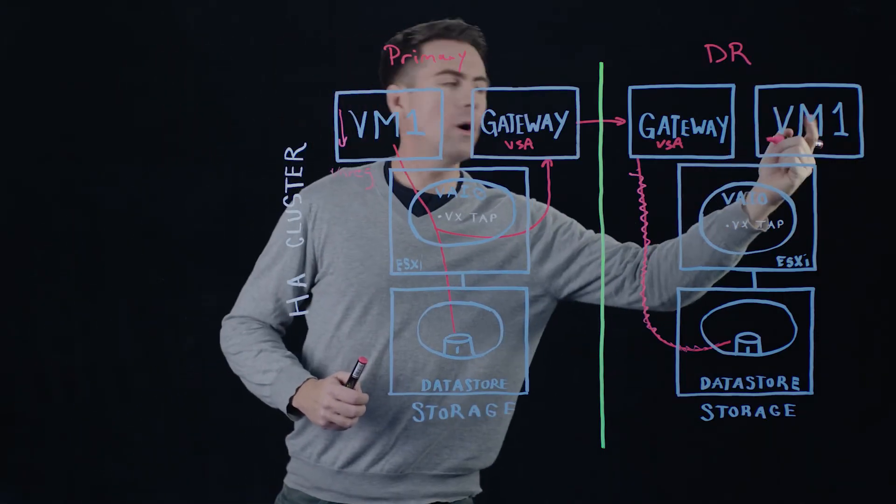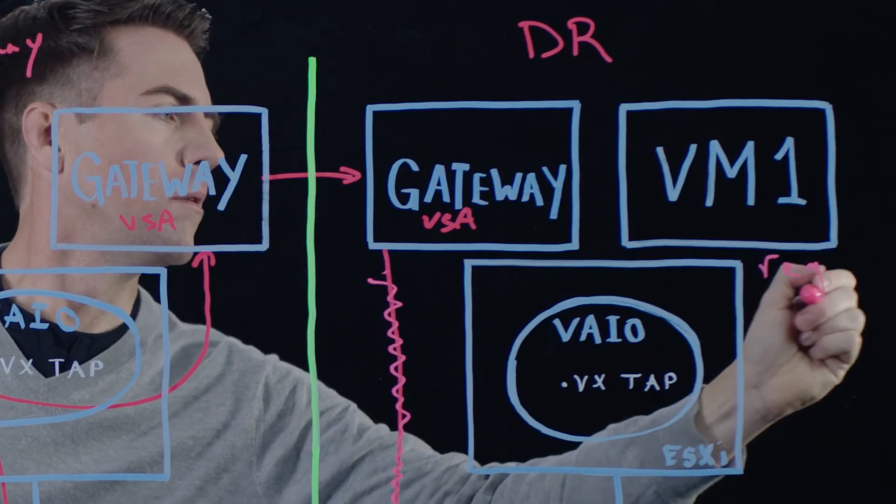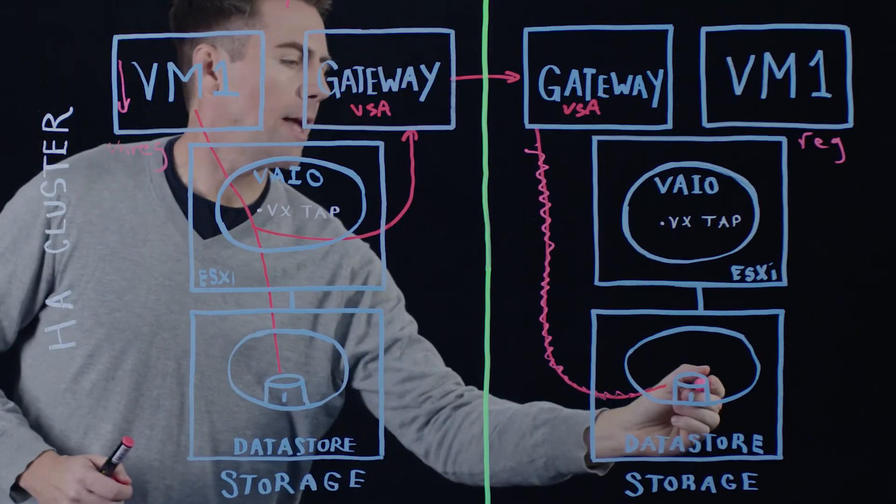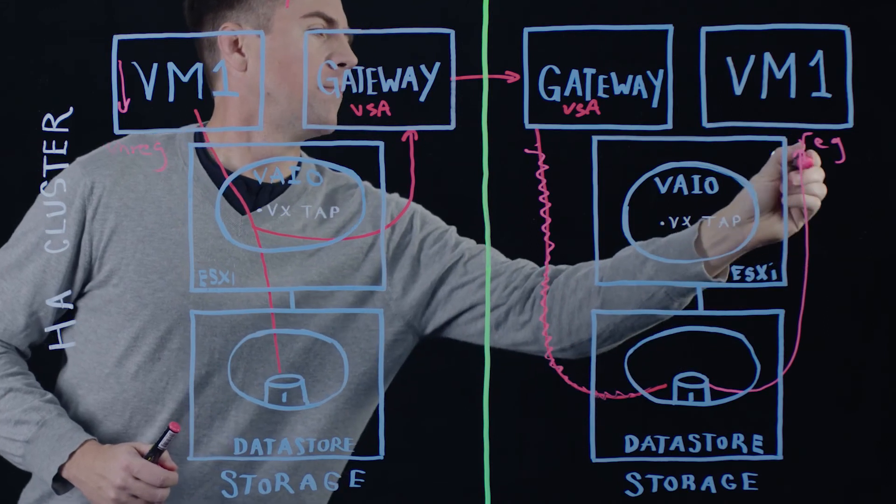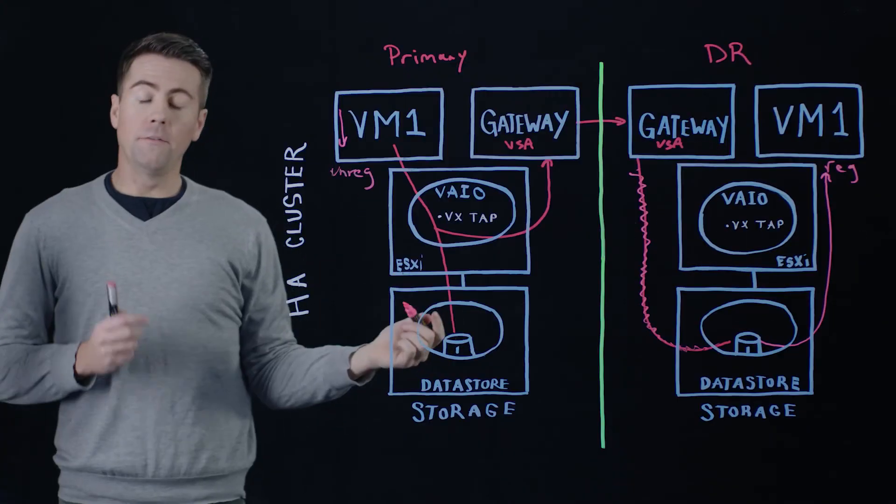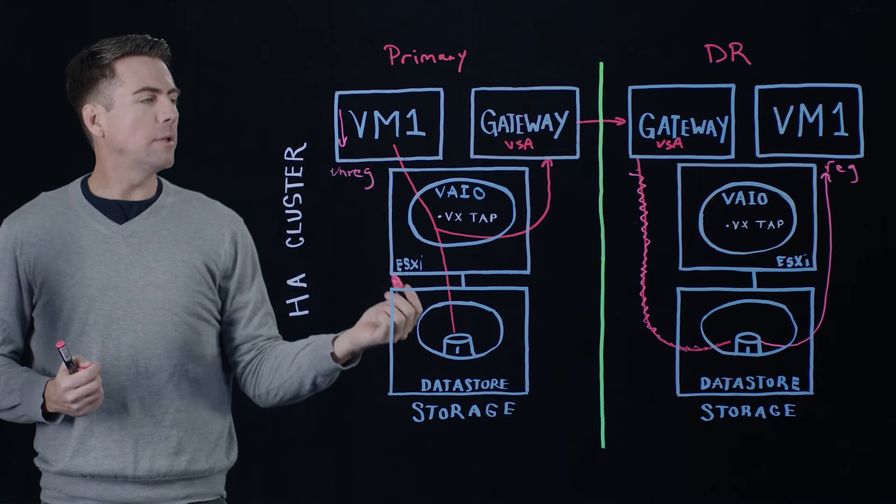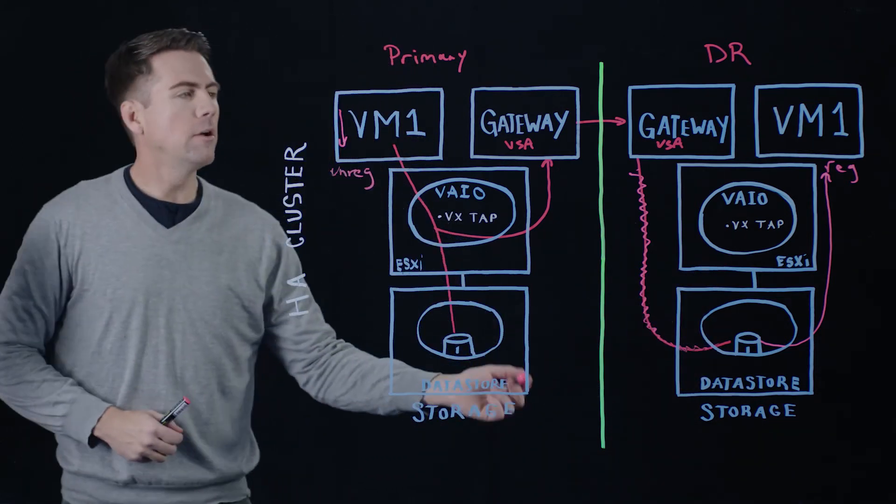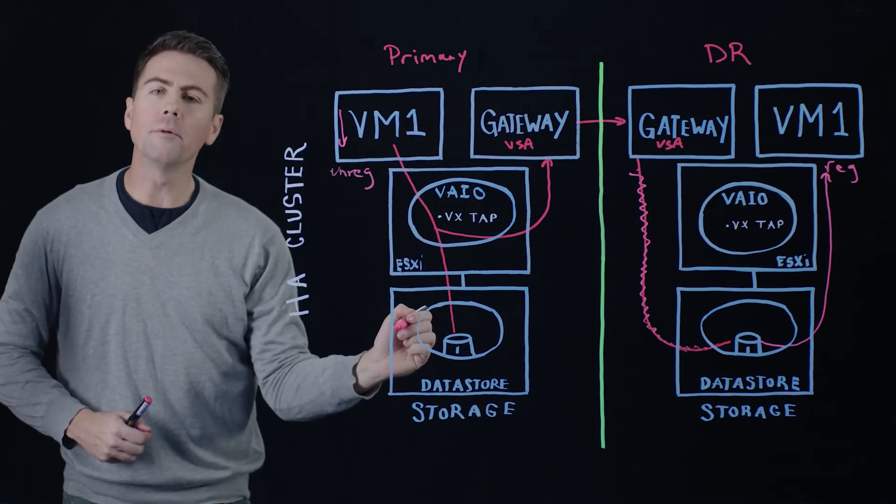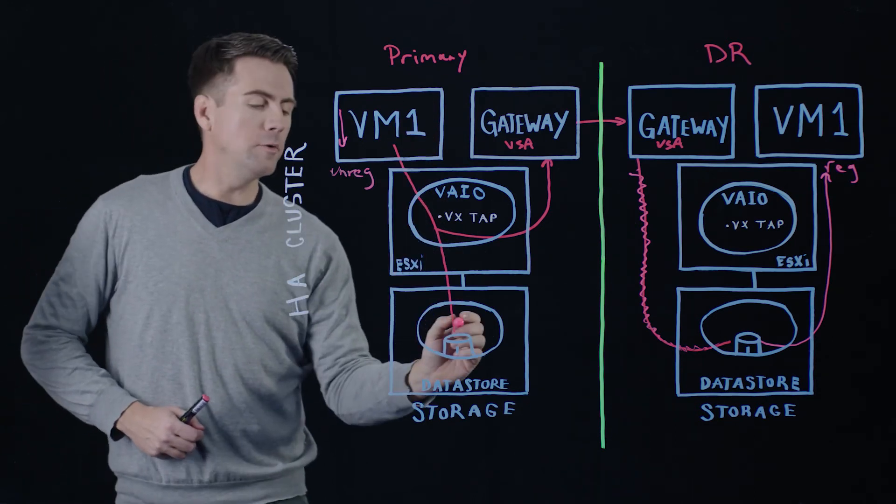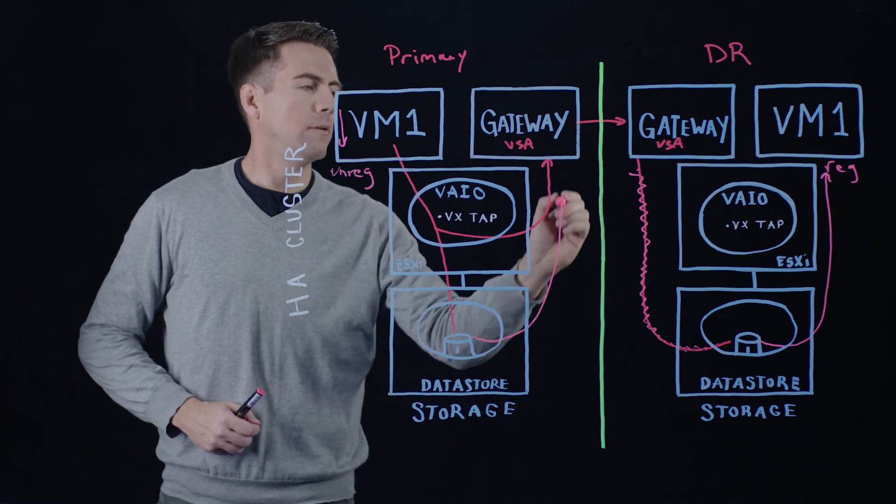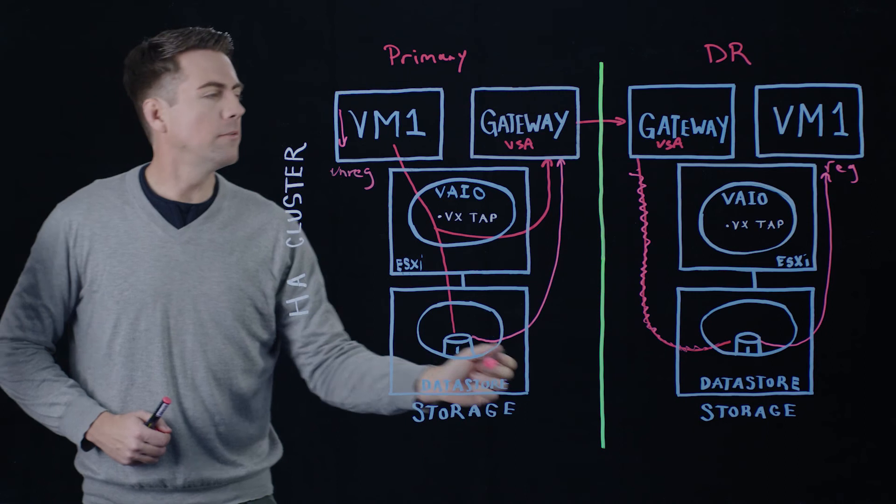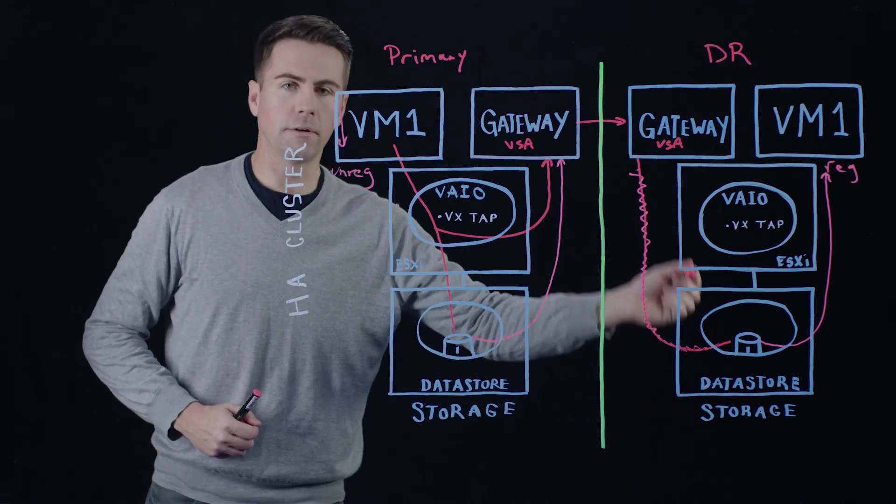We can then register VM1 to the inventory at our DR site, attach our synchronized disk up here to VM1, and then finally we would reverse the direction of the replication so that any changes that are now being written to this disk at our DR site are being replicated back to our primary site. The last thing we would do is attach this disk to the gateway here which is then the target for data changes and updates coming from our DR site.